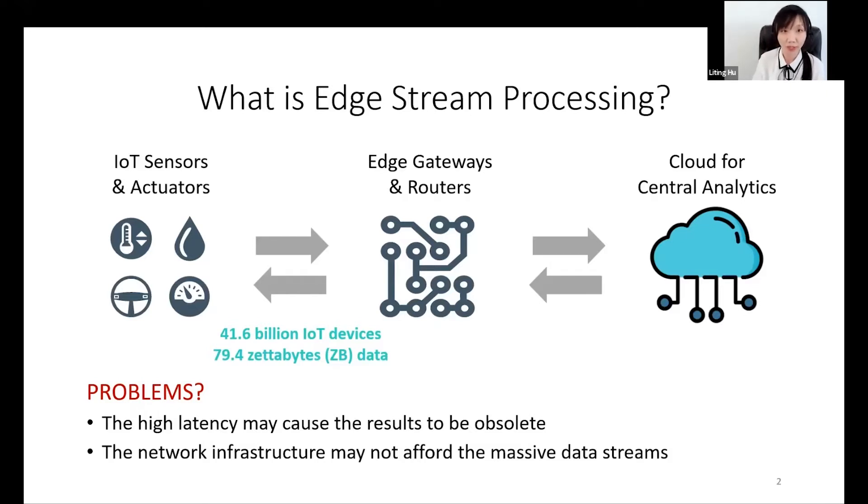The network infrastructure may not be able to afford these massive data streams. It is expected in 2025 there will be over 40 billion connected IoT devices generating over 79 gigabytes of data.